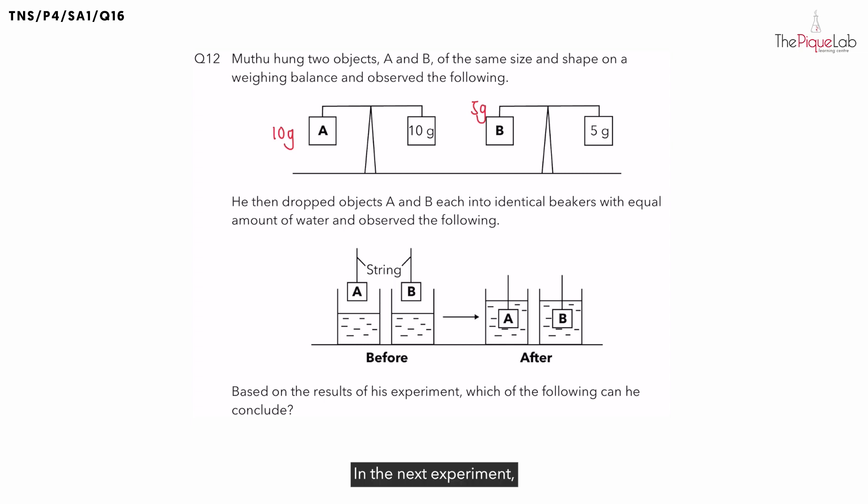In the next experiment, Mutu dropped both of the objects into beakers with equal amount of water. What does putting objects into water achieve? If the objects occupy space in the water, they will displace the water, causing the water level to rise. And how much the water level increases by shows the amount of water that was displaced, and from that, we can infer the volume of the objects.